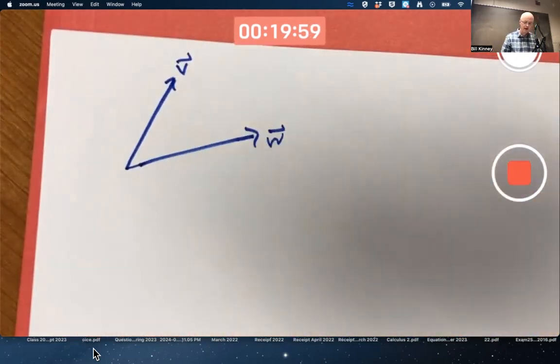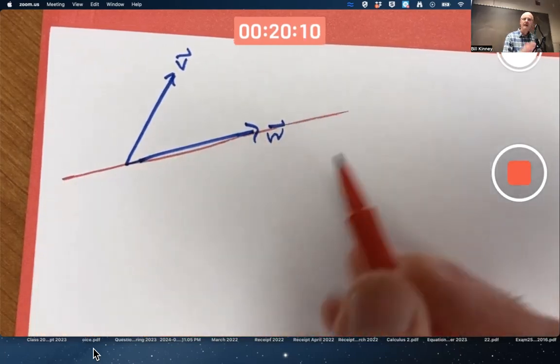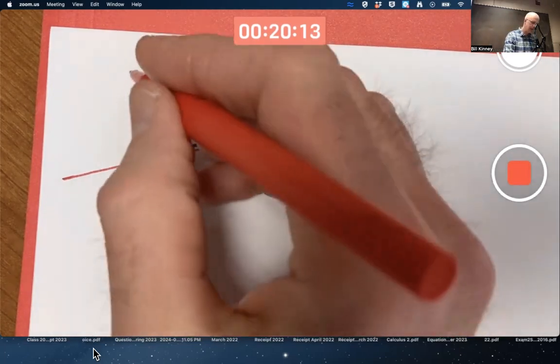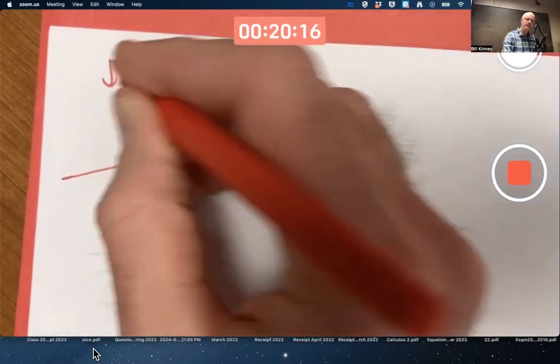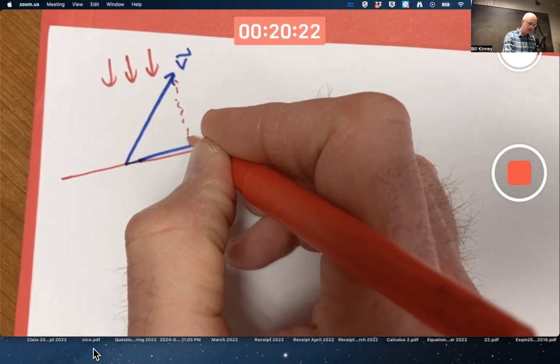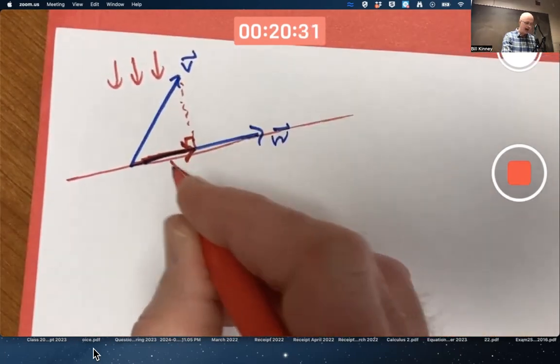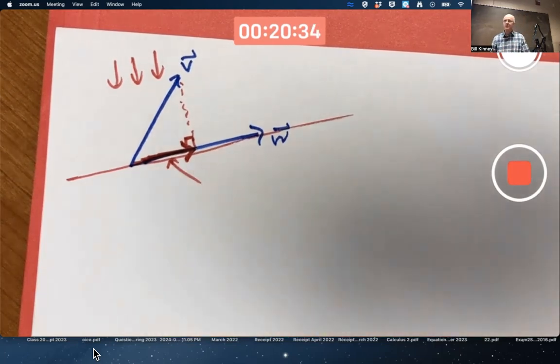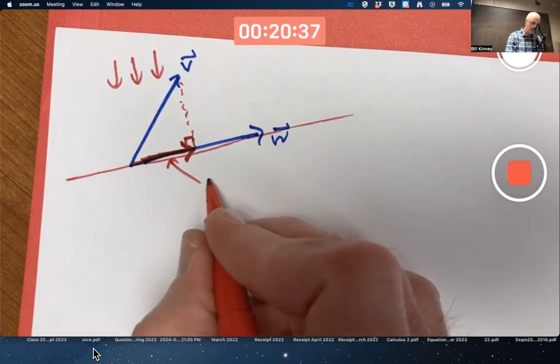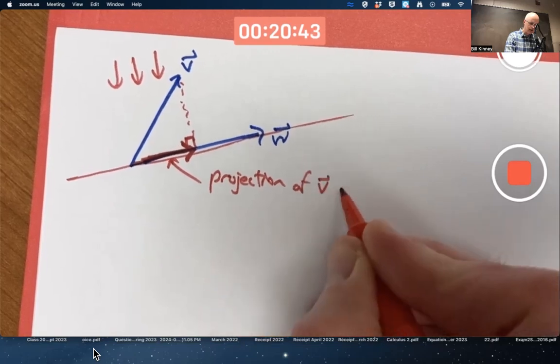Let's say V is right here and W is right there, and I'd like to figure out the shadow that V would cast along the line through W if light rays were coming in perpendicular to the line through W, causing V to cast a shadow. The shadow of V would look like this. That vector, which you can see from the picture seems to be unique, is called the projection of V along W.